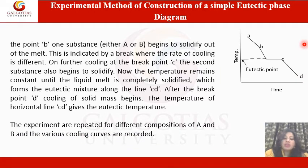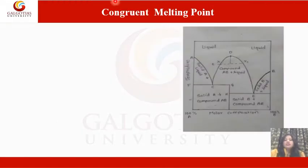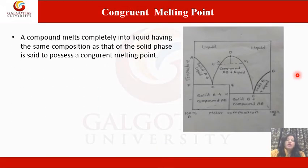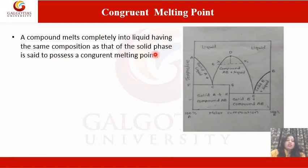The experiments are repeated for different compositions of A and B and various cooling curves are recorded. A compound that melts completely into the liquid having the same composition as that of the solid phase is said to possess a congruent melting point.